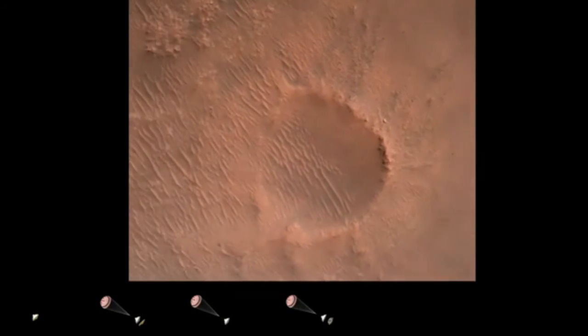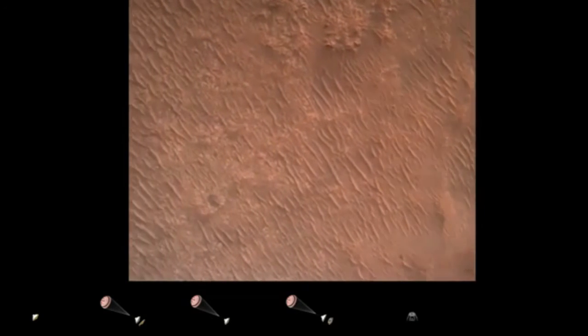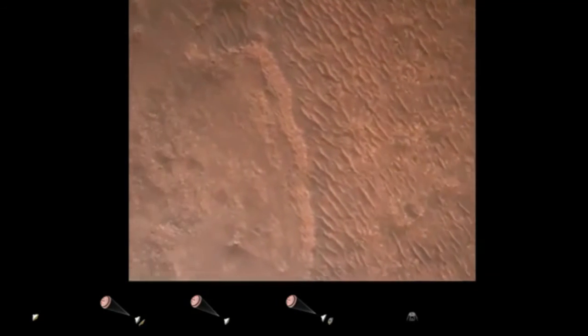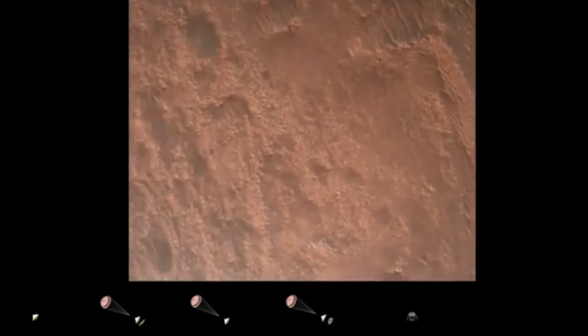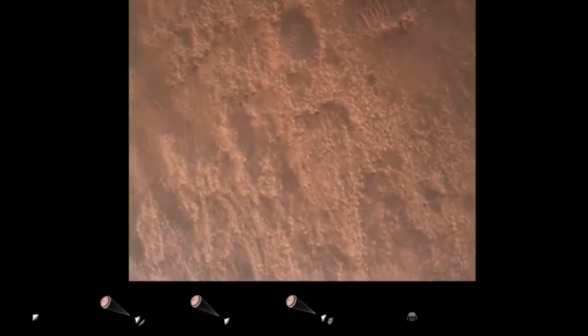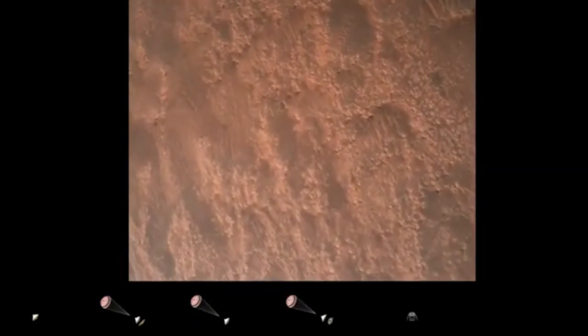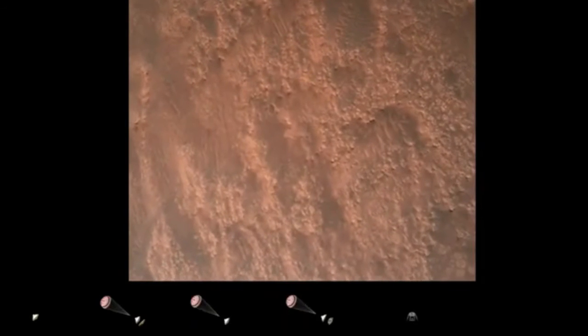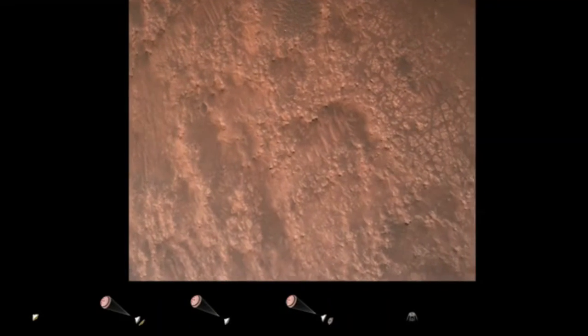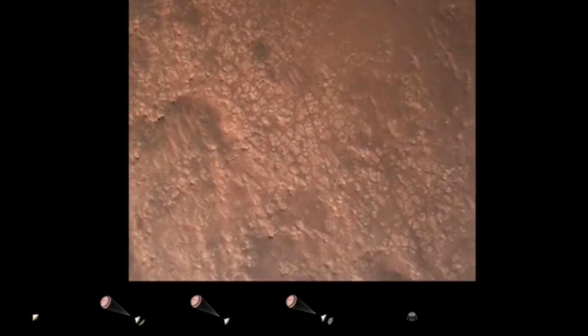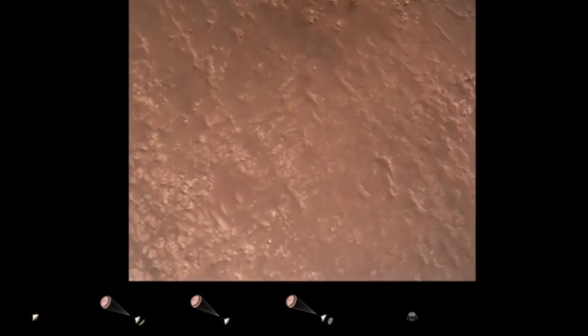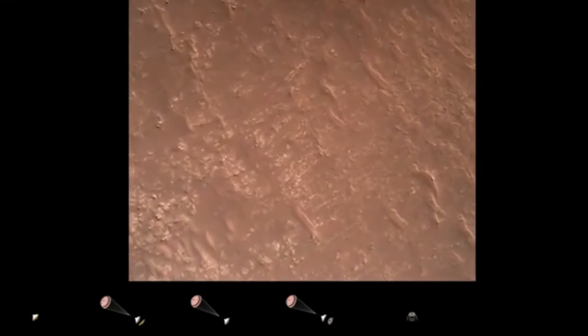We are currently performing the divert maneuver. Current velocity is about 75 meters per second at an altitude of about a kilometer off the surface of Mars. We have completed our terrain relative navigation. Current speed is about 30 meters per second at an altitude of about 300 meters off the surface of Mars.